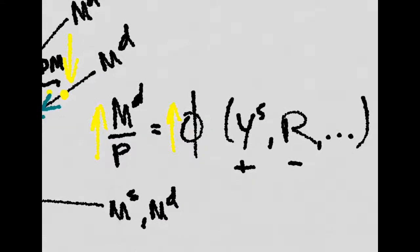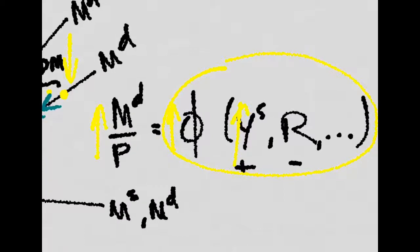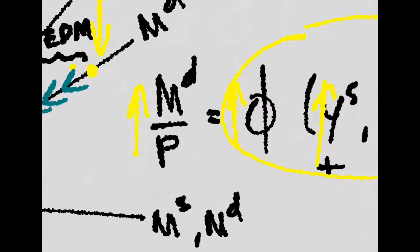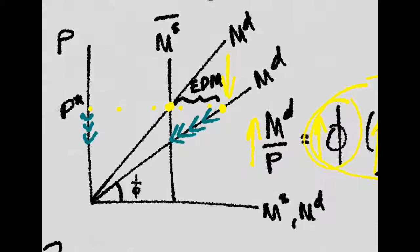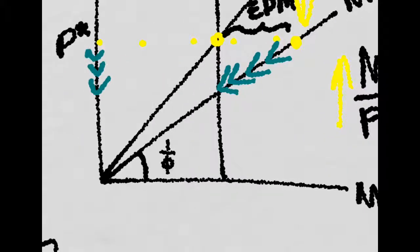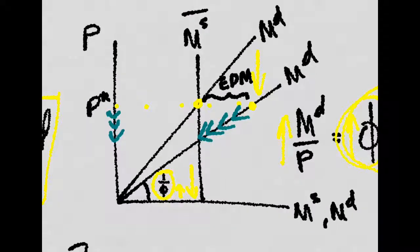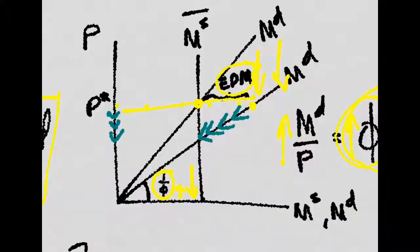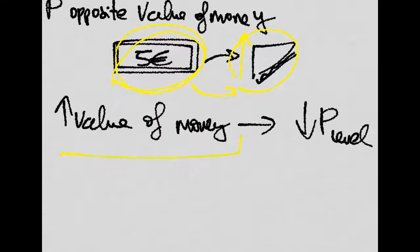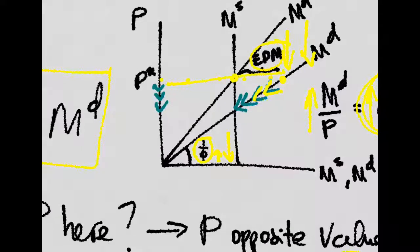Now imagine we have an increase in the demand for money — that is, the function phi has increased, for example because of an increase in output, which increases transactions. The slope of the money demand curve is 1 over phi, so if phi increases, the slope decreases, bringing the curve down. At the existing price level, there will be an excess demand for money. If there is excess demand for money, its value is higher, which brings down the price level. To clear the money market again, prices must fall until the new equilibrium price is reached.